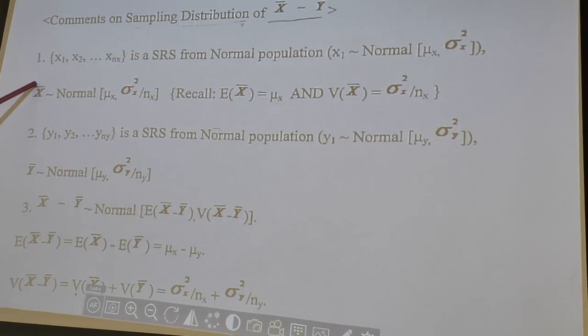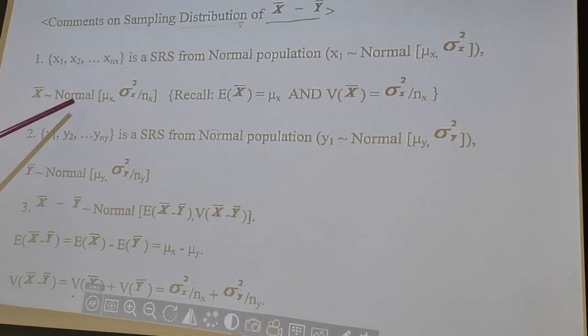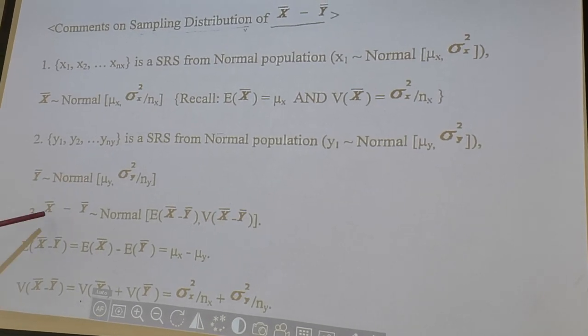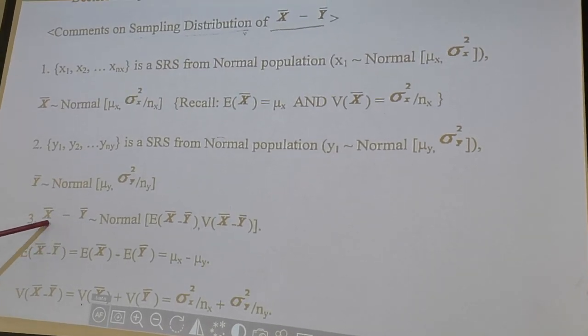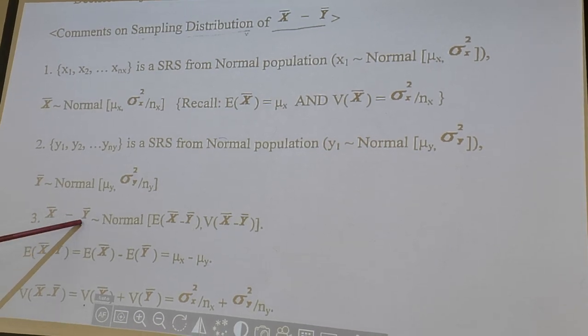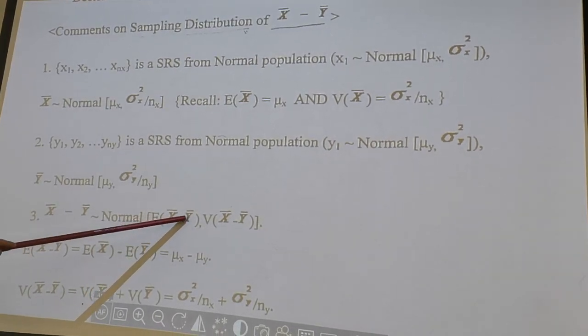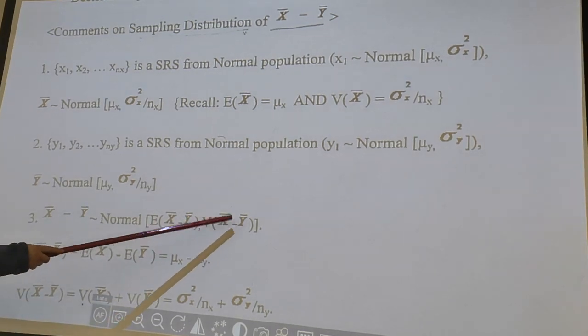We begin with x bar follow normal distribution and also y bar follow normal distribution. So x bar minus y bar, because normality is closed under linear combination, still normal, with mean x bar minus y bar and variance of x bar minus y bar.